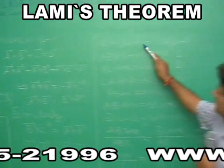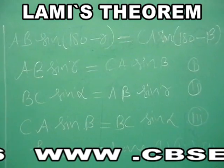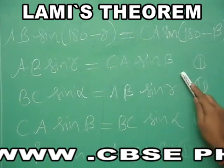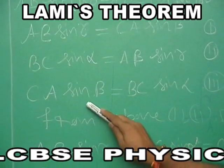Now students, ab sin 180 minus alpha, ca sin 180 minus beta that is ab sin alpha, ca sin beta, bc sin alpha, ab sin gamma, ca sin beta.